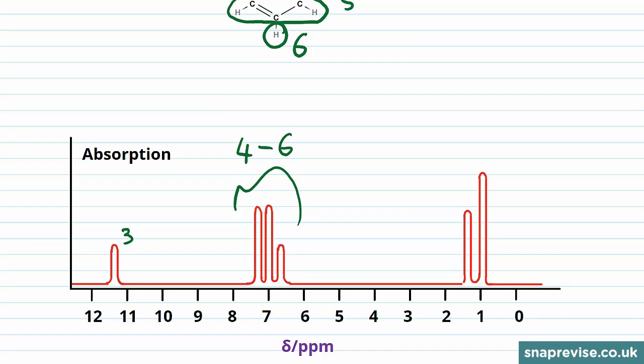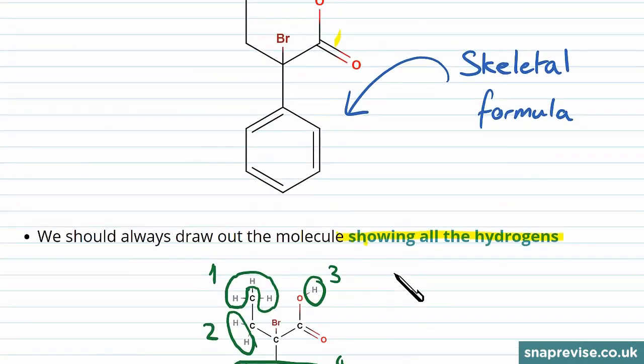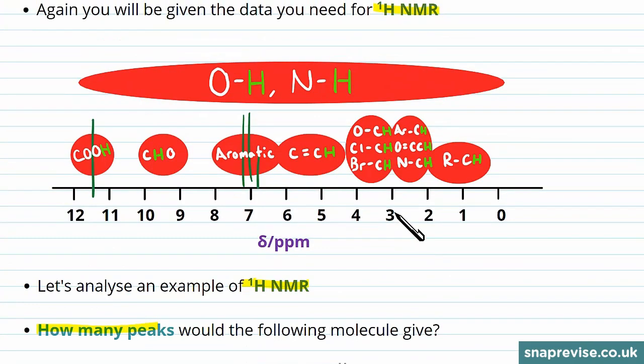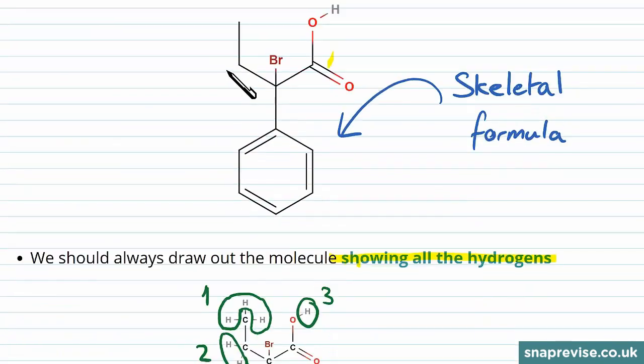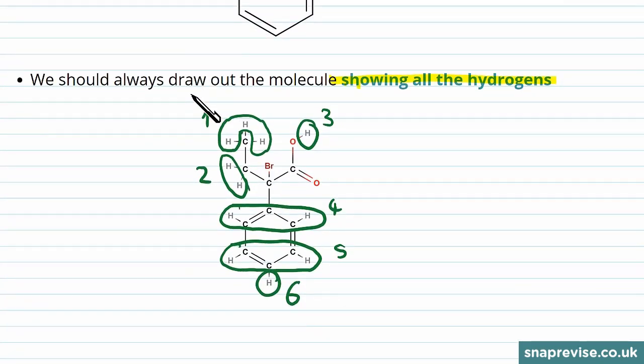Finally, we have two peaks that are around about a chemical shift of one, getting on for two. And looking at our data, that is the hydrogens that would be attached to a carbon, which is then attached to more carbon. And this is exactly what we'd expect from environments one and two. These are both in the immediate vicinity surrounded by just alkyl carbons and hydrogens.